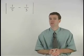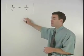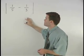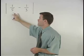To simplify this problem, the absolute value of one-fifth minus one-third, we start by simplifying inside the absolute value.